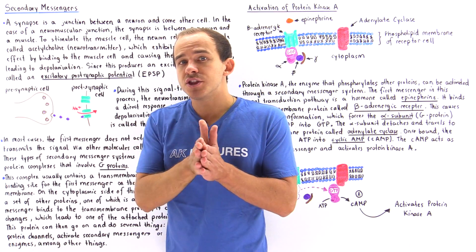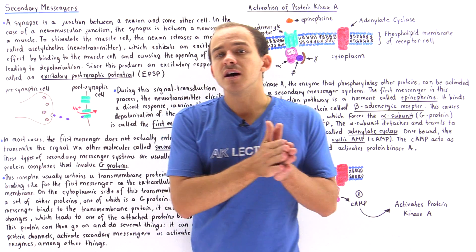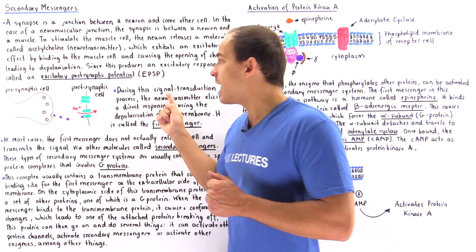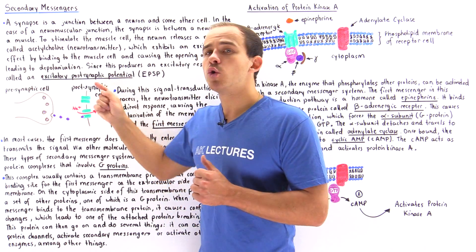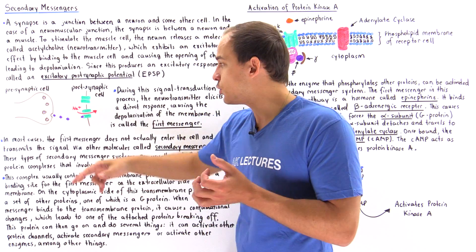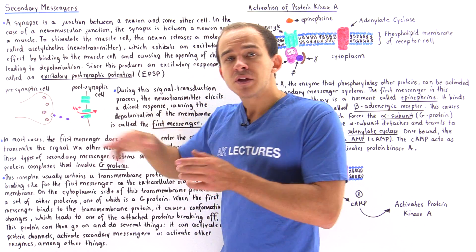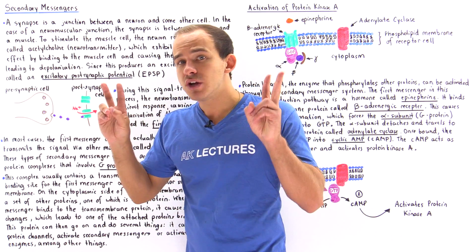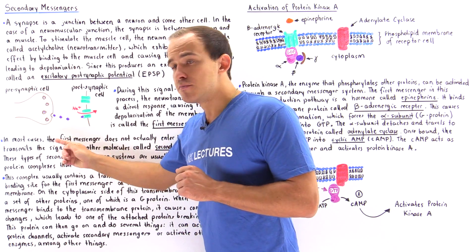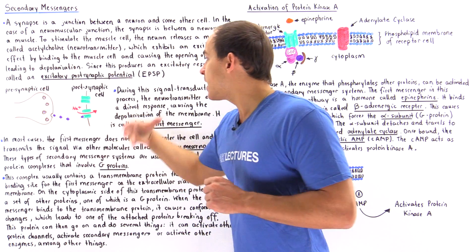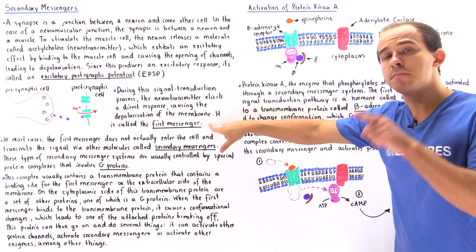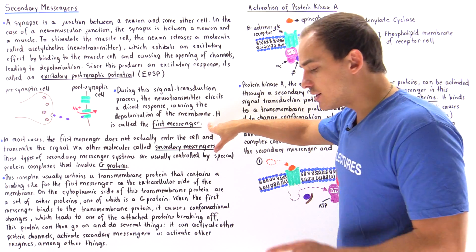Notice that this electrical signal doesn't actually travel directly from the presynaptic cell to the postsynaptic cell. Instead, we have an intermediate molecule — the neurotransmitter — that passes down the electrical signal. This neurotransmitter in this type of pathway is known as the first messenger, or the primary messenger molecule.